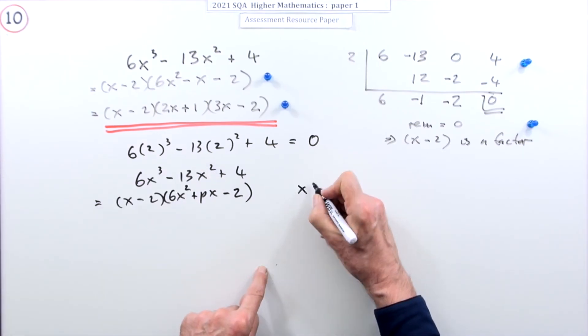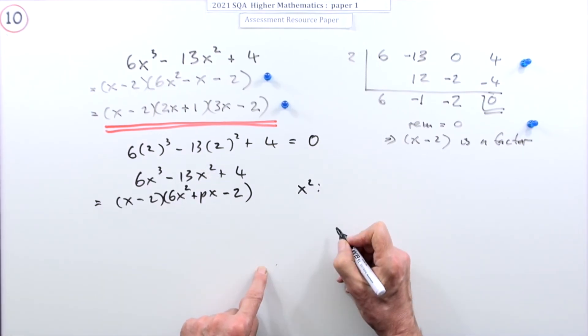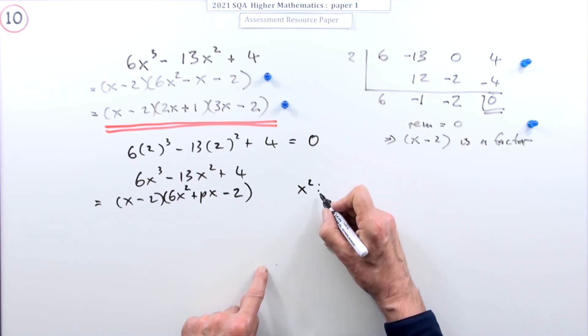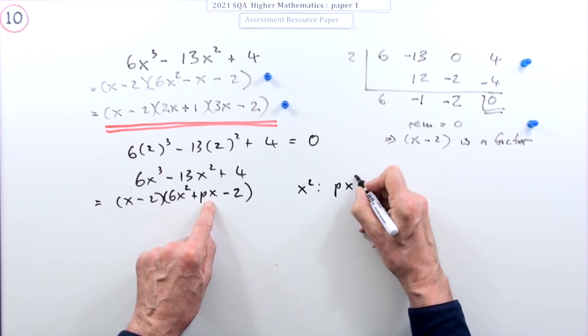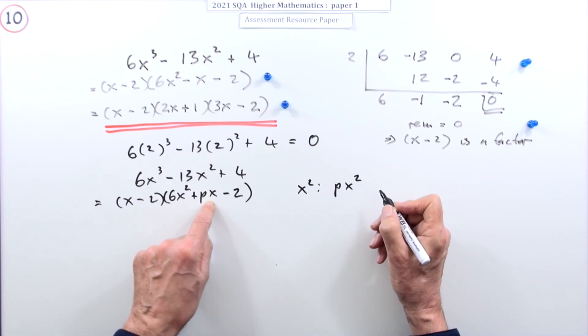But you can find that from this term you haven't used yet. How would you make the x² term? What would make an x² to make an x²? I'd either have the x times the px so that's a px², or I'd have the two times the 6x² so minus 12x².